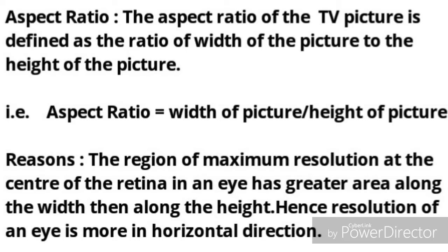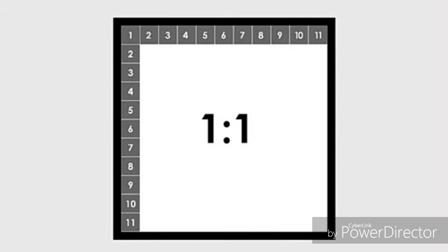For example, a 1:1 aspect ratio means that for every one unit of horizontal measurement, there is an equal one unit of vertical measurement.